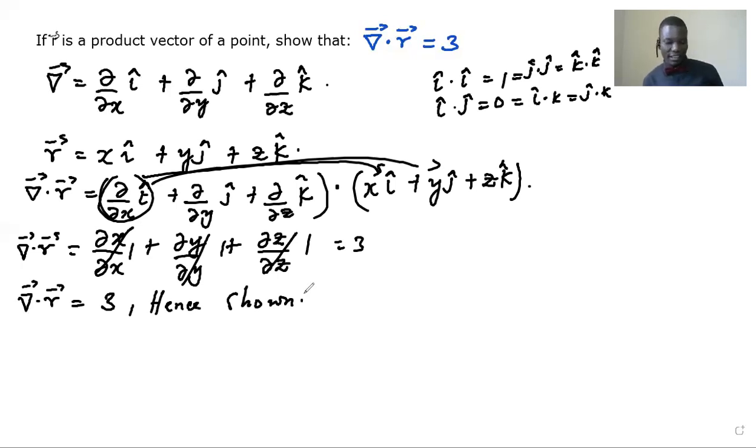So we've shown here that once we dot the del or nabla operator and the vector position in three dimension, what we get is a scalar, which is three.